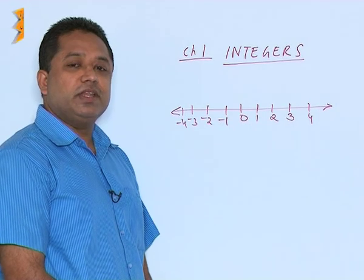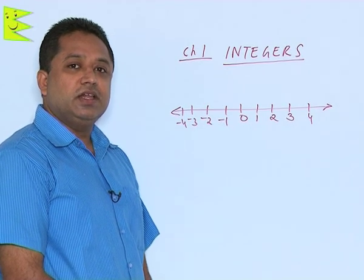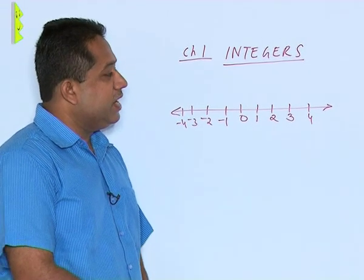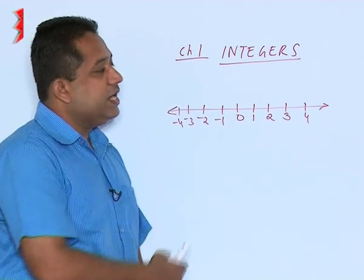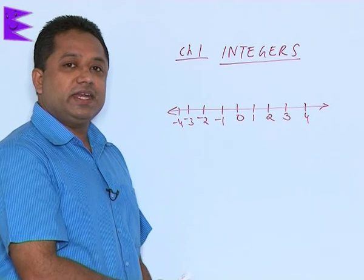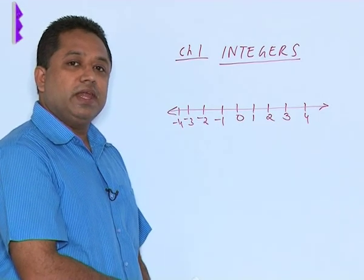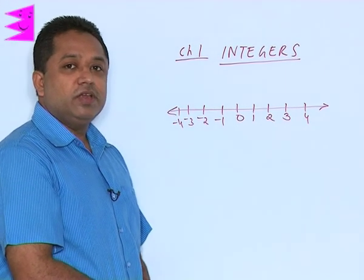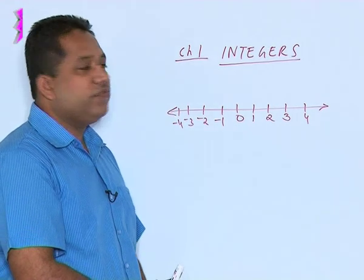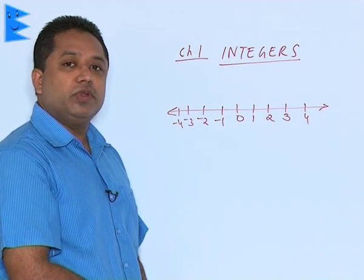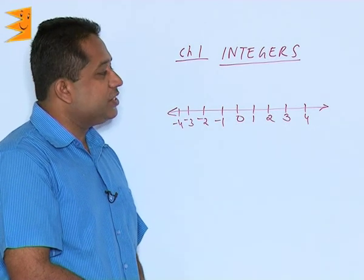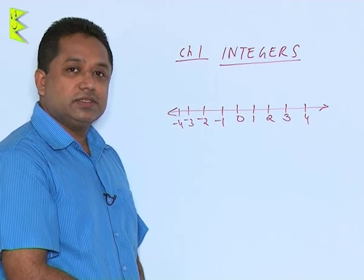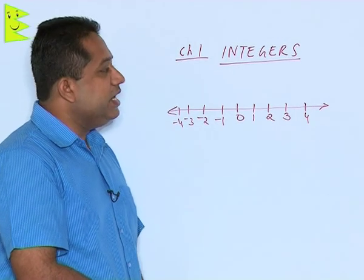The first chapter, Integers, covers representation of numbers on the number line, how to add integers, how to subtract integers, how to multiply them, and how to divide them. We will also be learning about different properties like closure property, distributive property, commutative property, and other properties which are required for solving questions.